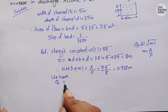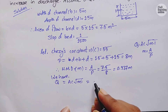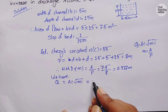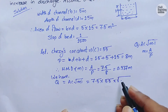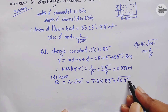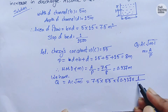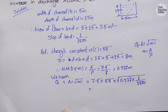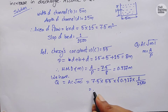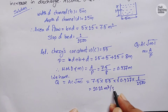Now let us calculate the discharge: Q equals A·C·√(m·i). Substituting: area is 7.5, Chezy's constant C is 55, hydraulic mean depth m is 0.937, and bed slope i is 1 upon 1500. Solving this, the discharge Q comes out to be 10.31 cubic meters per second.